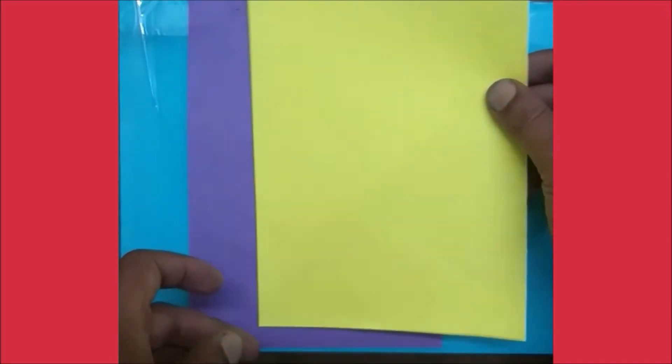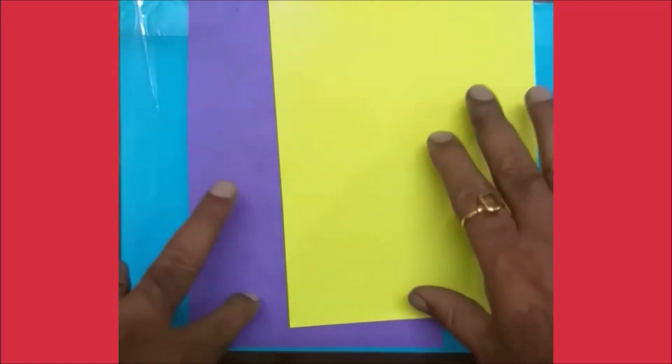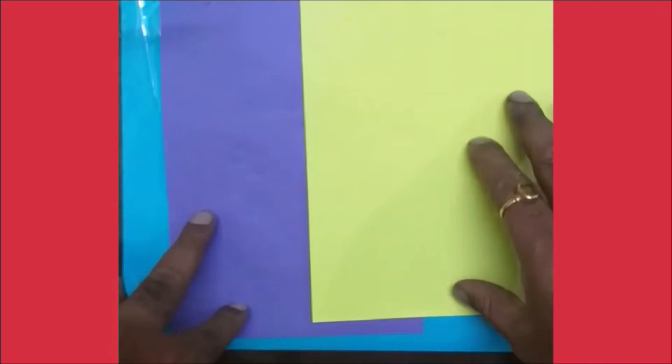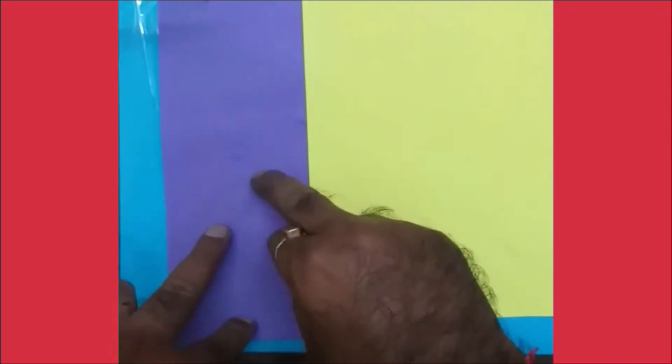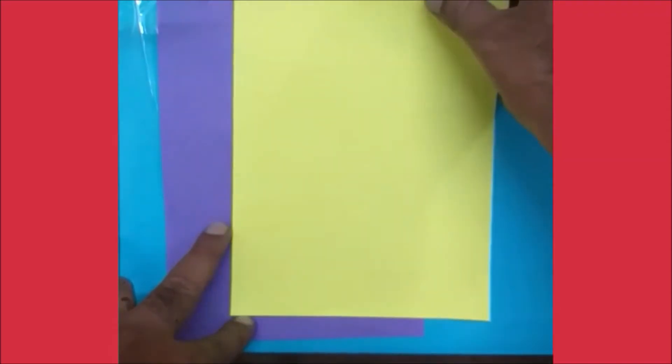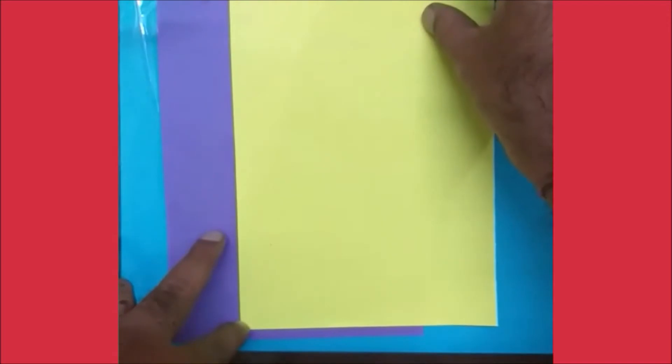We are going to make a Christmas tree. For that, you need to take two papers - this one for the backdrop and this one for making the Christmas tree. You'll also need scissors, sketch pen, and glue.